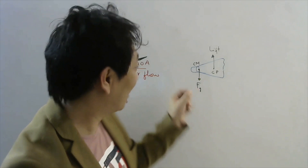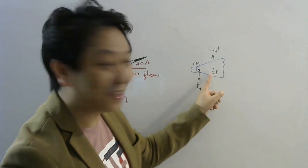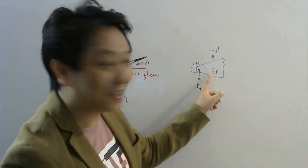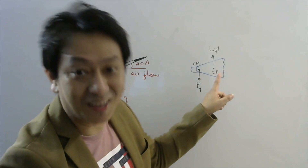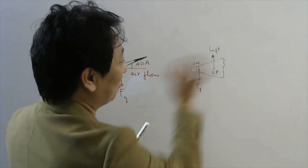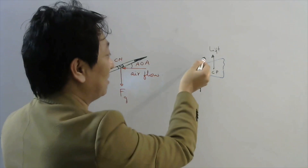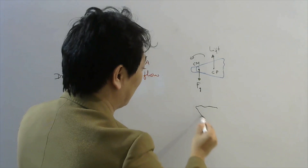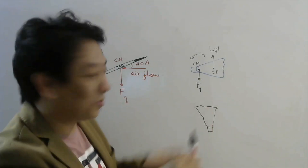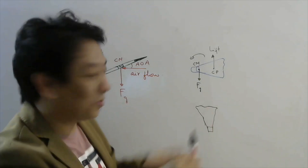Now let us look at the shuttlecock. The center of mass is near the cork because that is where more mass is. The center of pressure — where the lift force acts — will be near the feather part, because that has more area and more air hits there. So as you can observe, the moment you release the shuttlecock, there will be a torque due to the lift force, the whole thing will rotate, and the shuttlecock will take the configuration with its nose or cork facing downward.